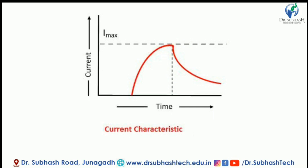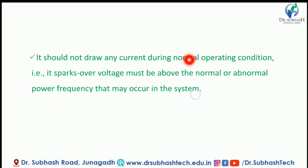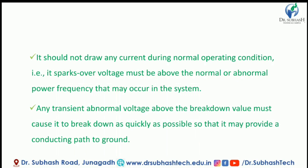The Lightning Arrestor should not draw any current during normal operating condition. The spark-over voltage must be above the normal or abnormal power frequency voltage that may occur in the power system. Any transient above the abnormal voltage — the breakdown value must cause it to break down as quickly as possible so that it may provide a conducting path to ground.